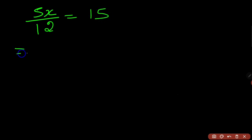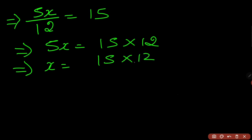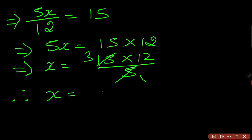Further solving, 5x upon 12 equals 15. So 5x equals 15 multiplied by 12. Therefore x equals 15 multiplied by 12 upon 5. Cancelling, 5 goes 3 times into 15. Therefore x equals 3 into 12, which is 36. So the number is 36.